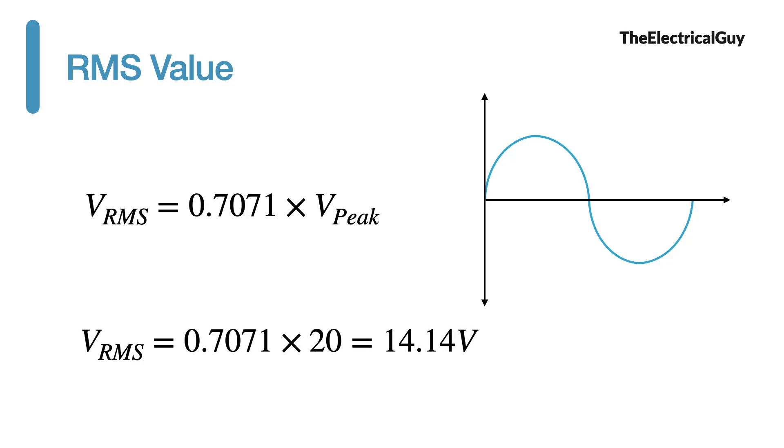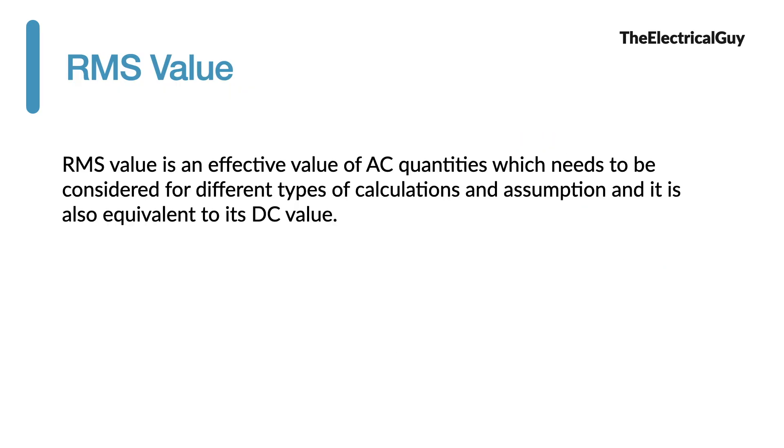So we can also calculate the RMS value in our example using the formula and which will give us 14.14 volts. So to summarize RMS value is an effective value of AC quantities which needs to be considered for different types of calculation and assumption and it is also equivalent to its DC value. Do let me know in the comment section where do we use RMS value. What are the different examples of RMS value. Do let me know that via comments.